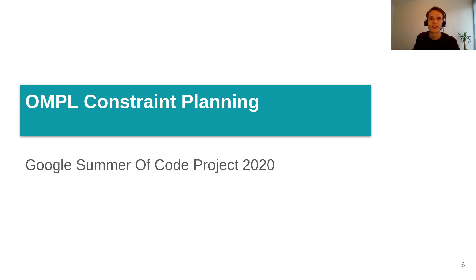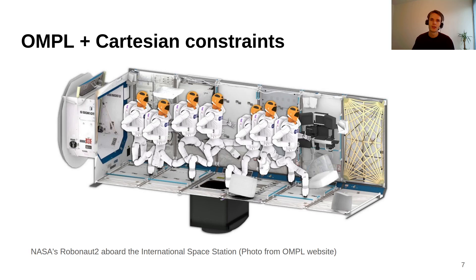I am Jeroen and this summer I worked on MoveIt's OMPL interface. OMPL had the functionality for planning with Cartesian path constraints for a long time. Here is an example from the website where we plan for NASA's Robonaut 2, which involves a lot of Cartesian constraints.